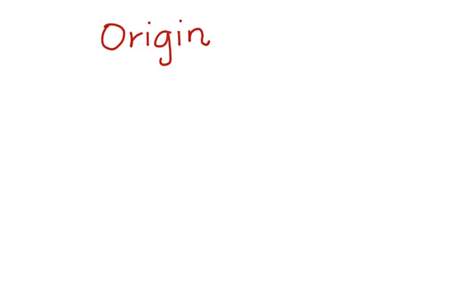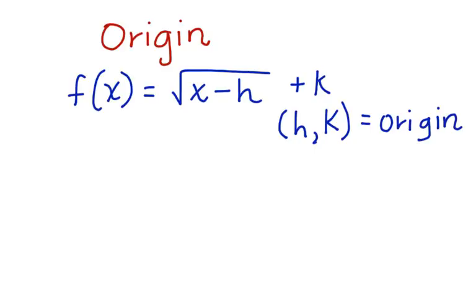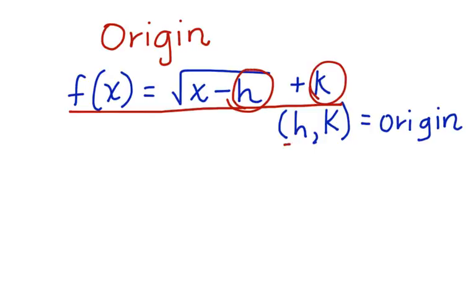To determine the origin, we can first look at the form of a square root function. We can write the function as f(x) = √(x − h) + k. Whatever values we have for h and k give us the coordinates for the origin.